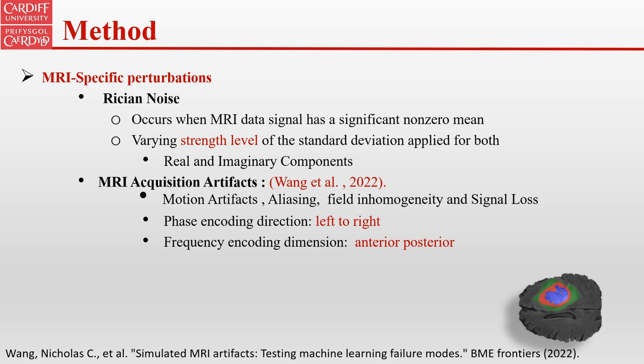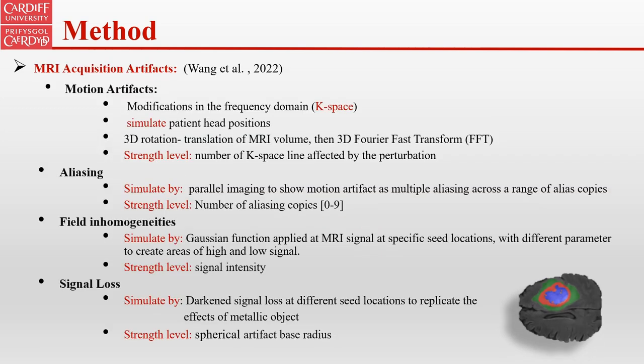For all of those artifacts, the assumption was made that the phase encoding direction is left to right, and the frequency encoding dimension was anterior-posterior. Motion artifacts in MRI are common due to patients moving their head during acquisition. The study used the 3D fast Fourier transform to transform the volume into k-space, resulting in the image volume with motion artifacts applied. The study also simulated aliasing as a ghosted copy with multiple copies. The inhomogeneity artifact was created by randomly selecting 5-seed locations near the brain edge to simulate bias in the field near surface receiver coils. The study also simulated the effect of metallic objects on MRI signal loss and distortion due to rapid variation in the main magnetic field.